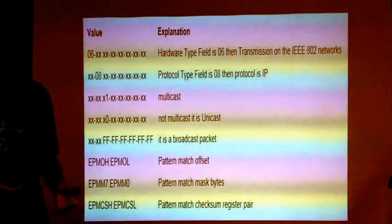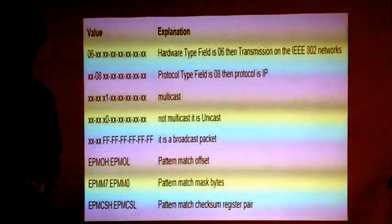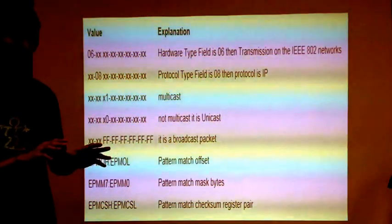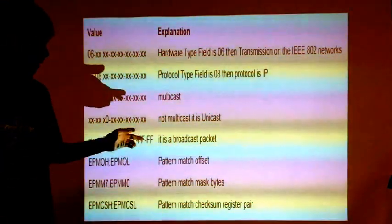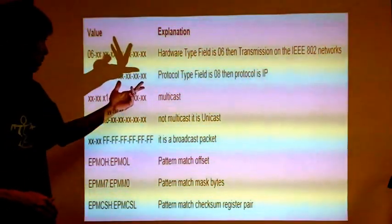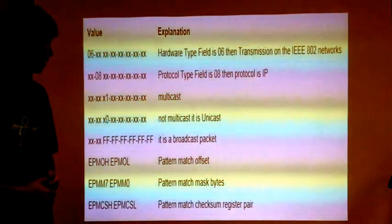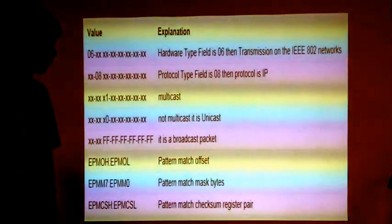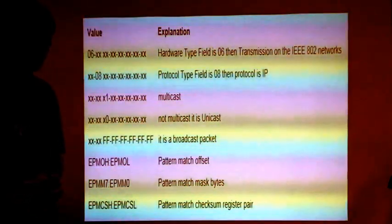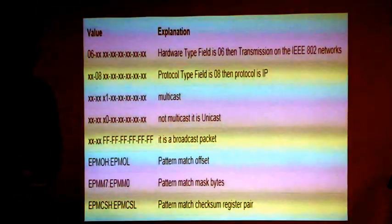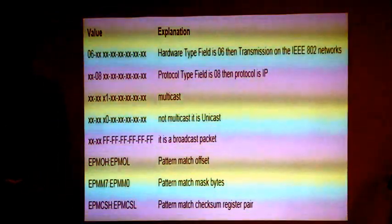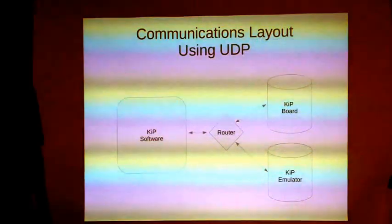If you don't know what multicast or unicast is, multicast is from one transmission, we're able to send it out to like a group. Unicast is one-to-one. Protocol type is 08, which was for the 802 networks, because we're using an ARP.